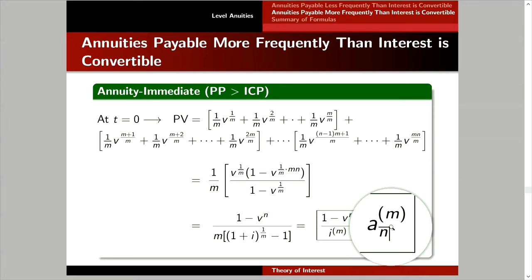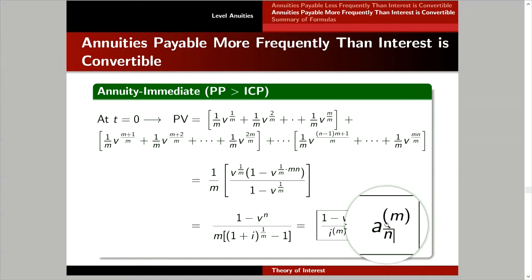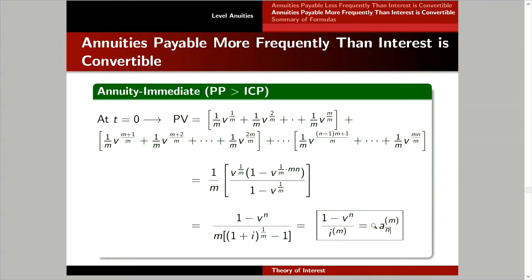How do we interpret a-angle-n upper m? This is the present value of an annuity immediate where payments of 1 over m are made at the end of each mth of a period, for n periods. The payment amount is 1 over m, but take note — 1 over m is not the coefficient of a-angle-n upper m. The coefficient is 1.